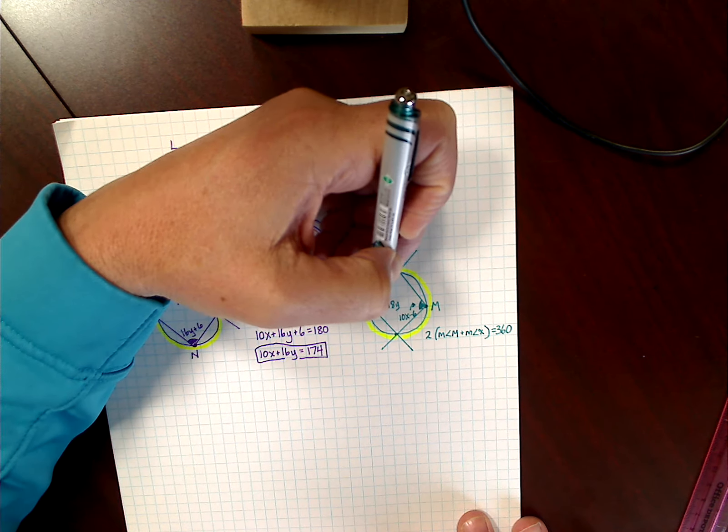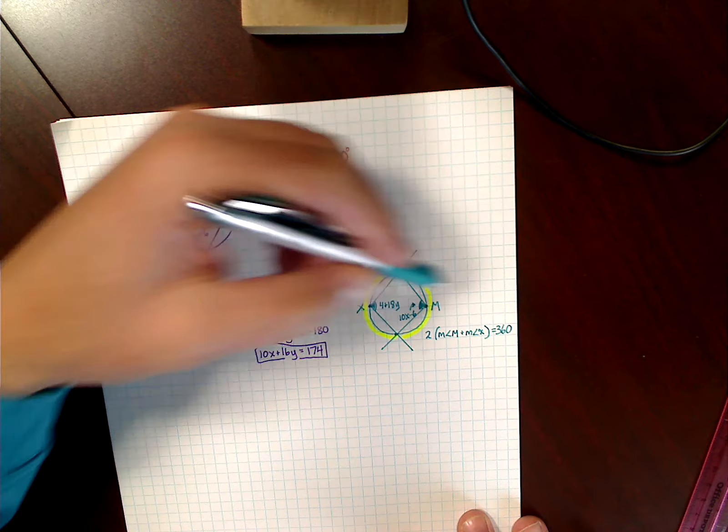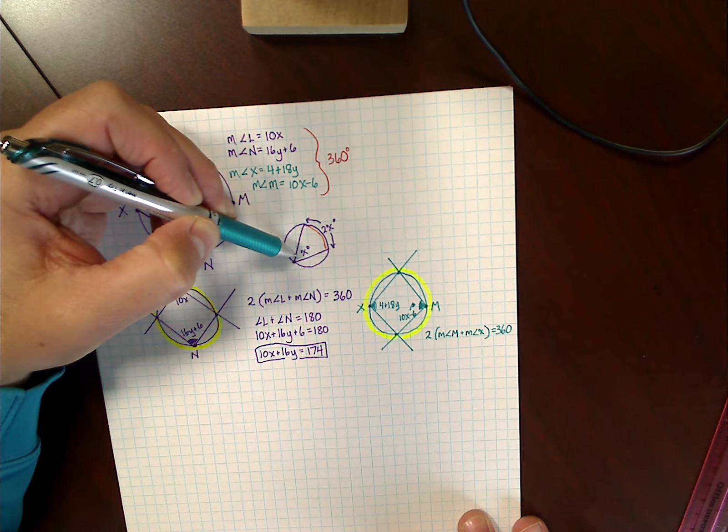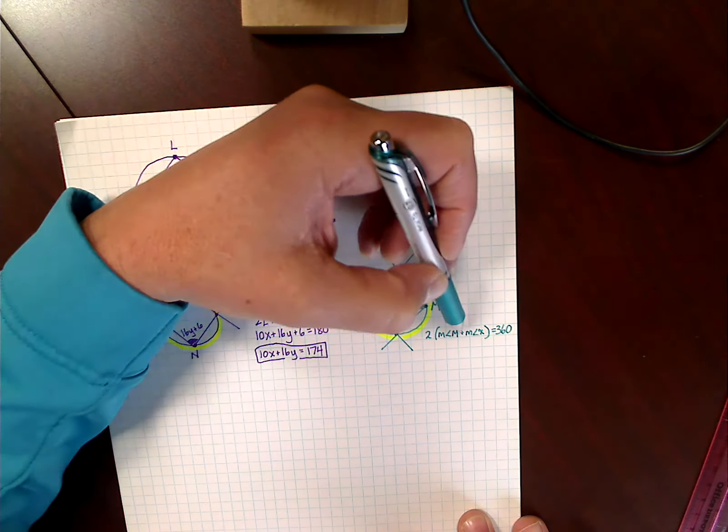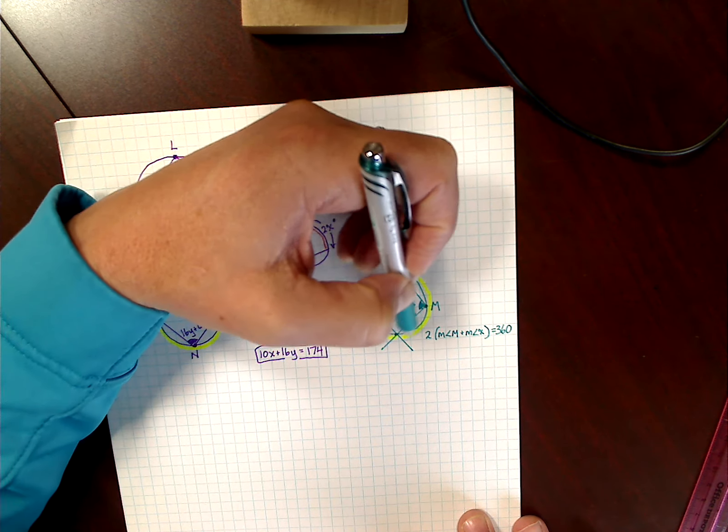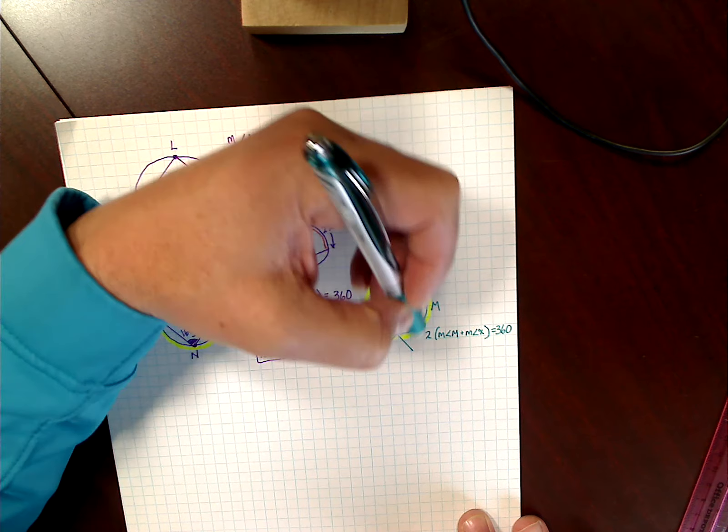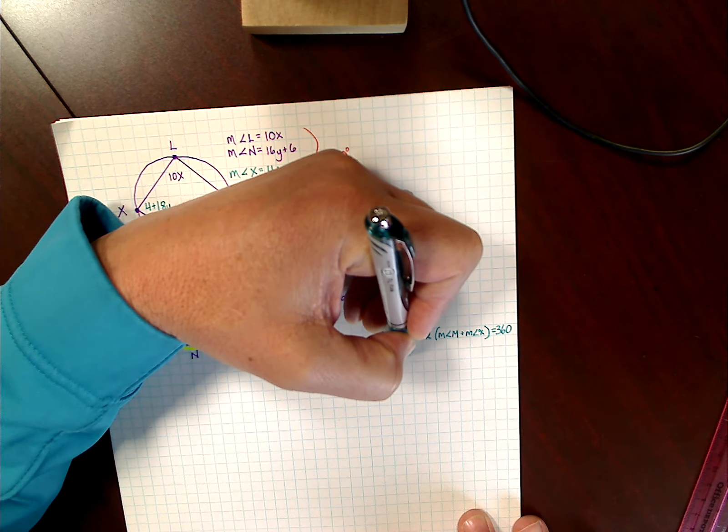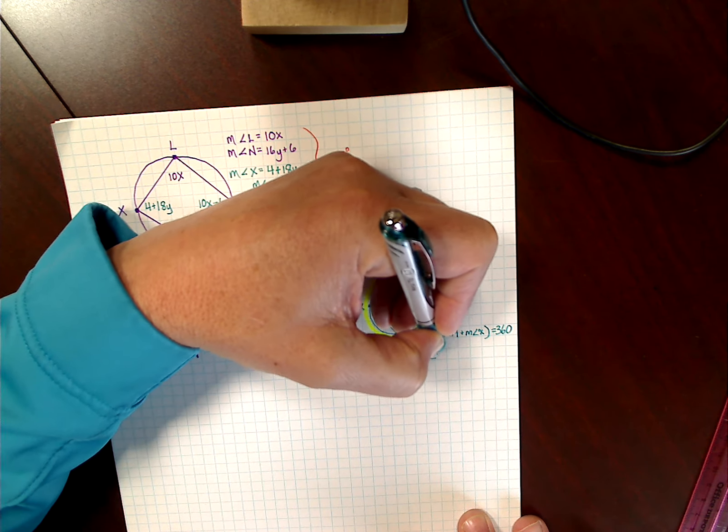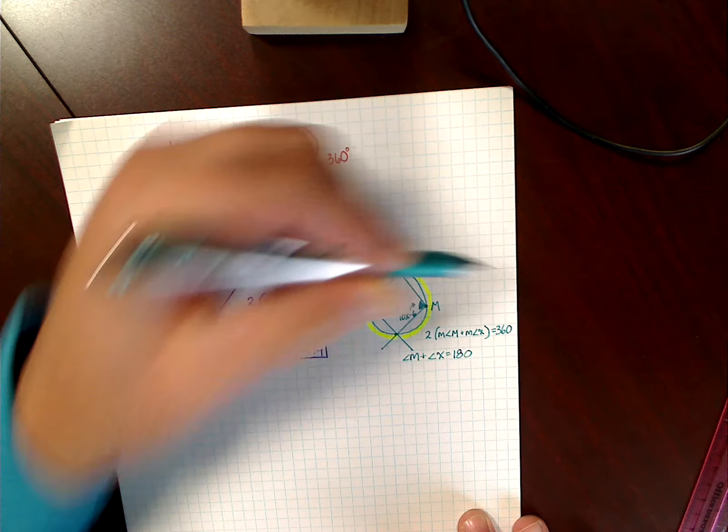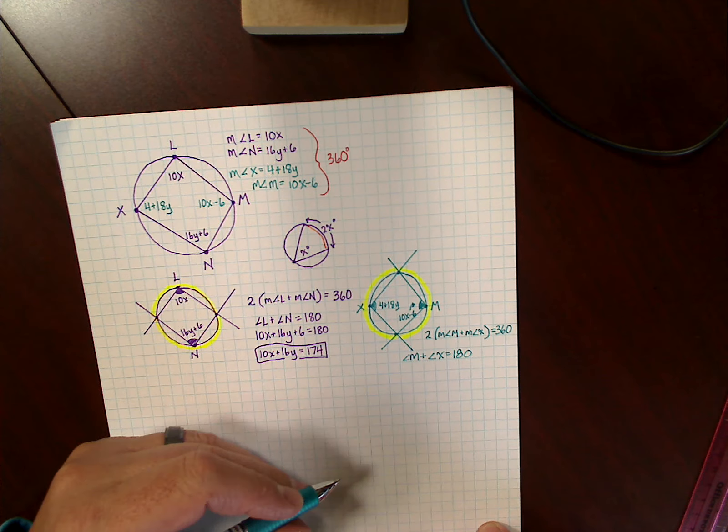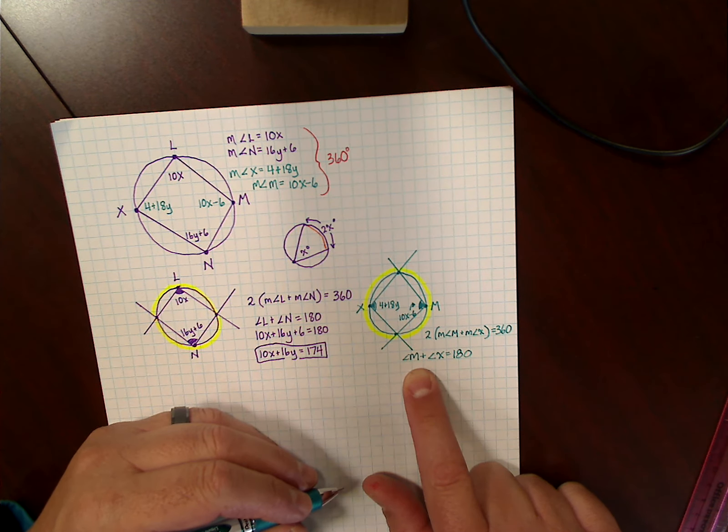We set up the two angles, angle M plus angle X doubled, because remember, the arc is double the amount of the inscribed angle. So here are the two inscribed angles. If I double it, it equals the intercepted arc, which is the entire circle, which is 360 degrees. So again, the measure of angle M plus angle X is equal to 180. And I got 180 again by dividing both sides by 2.